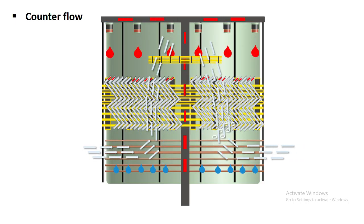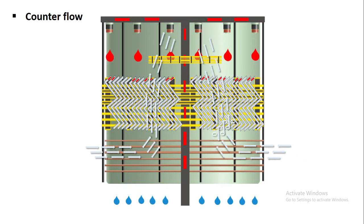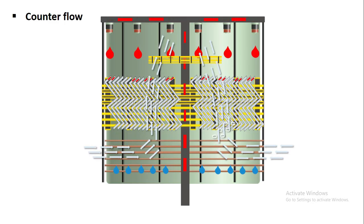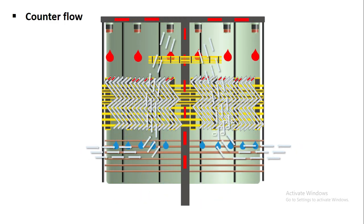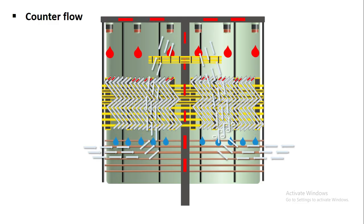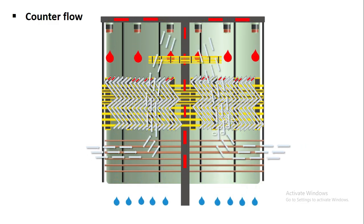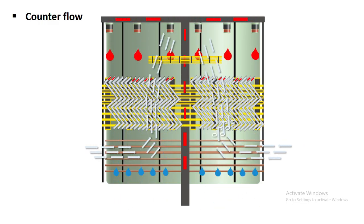In the counter flow cooling towers air flows upward through the fills while water flows downward from the top. As you can see in the working animation air and water move in the opposite direction. The main advantage of counter flow cooling tower is its compact design. The more compact design effect in better thermal performance of this counter flow cooling tower.